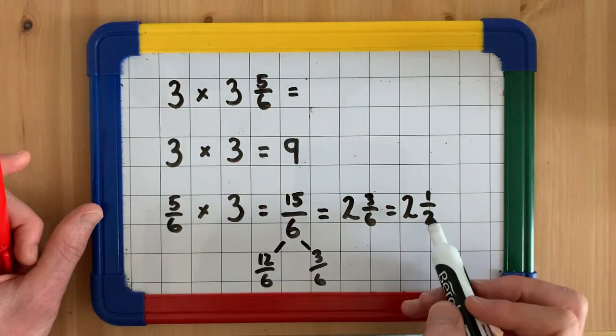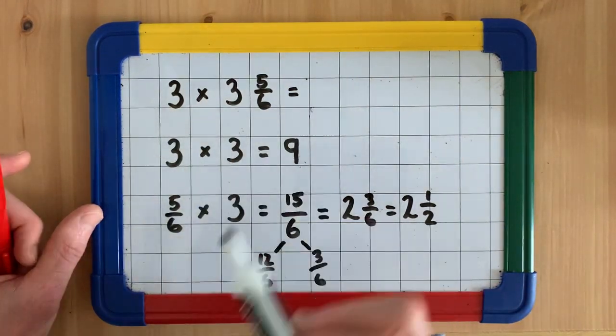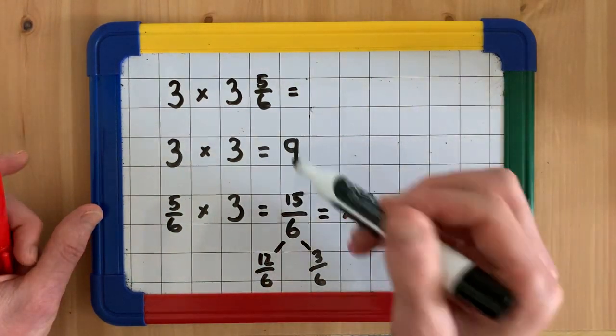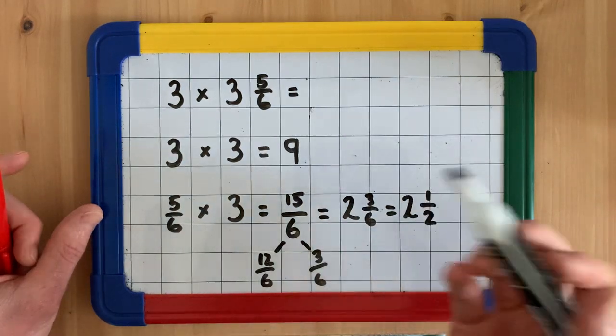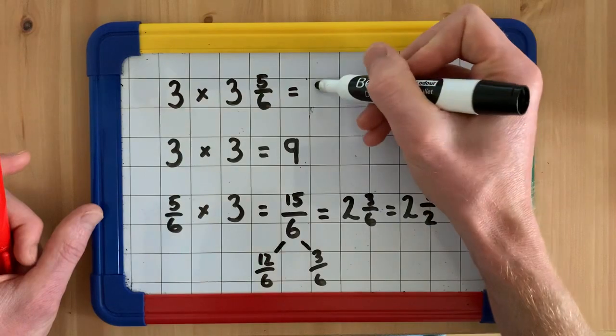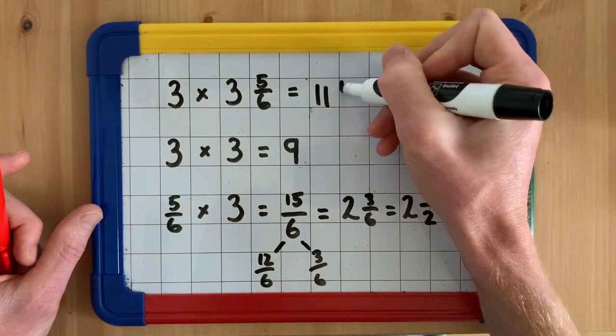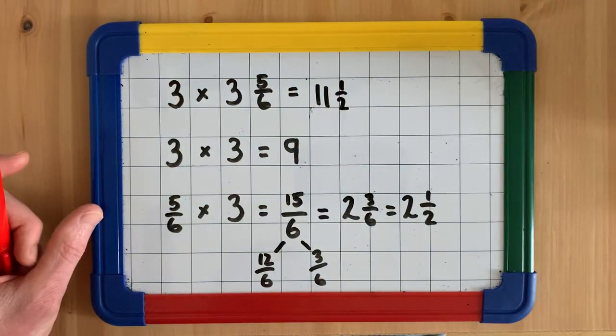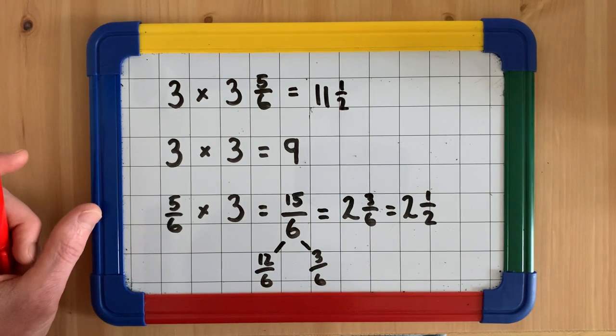So 5/6 times 3 is 2 and a half. 3 times 3 is 9. Now we recombine these two numbers. We add them together. 9 add 2 makes 11 and we have our half. So our answer is 11 and a half.